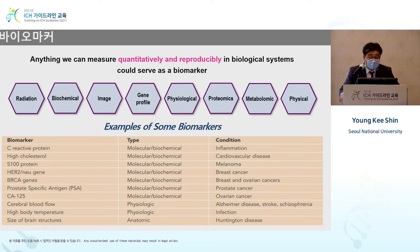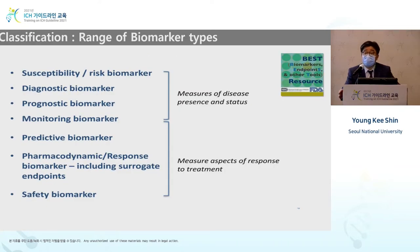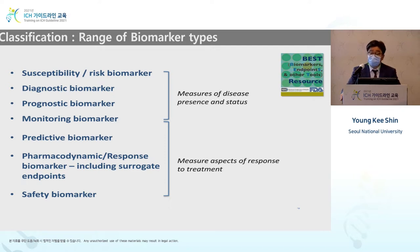Examples of biomarkers include prostate specific antigen, body temperature, brain structure size, and blood pressure. When doctors make diagnoses and decisions, biomarkers can include everything measurable on the patient. These biomarkers can be used in developing new drugs. However, there has been some confusion with the definition of biomarkers, which is why biomarker, endpoint, and relevant tools were compiled together for discussion by a working group at the FDA.